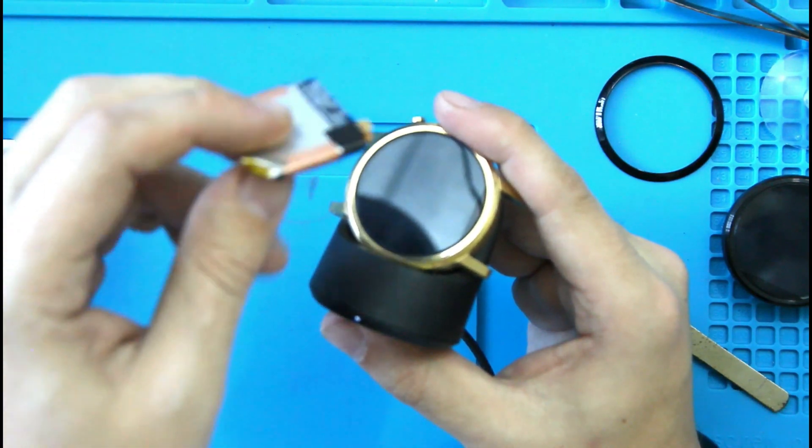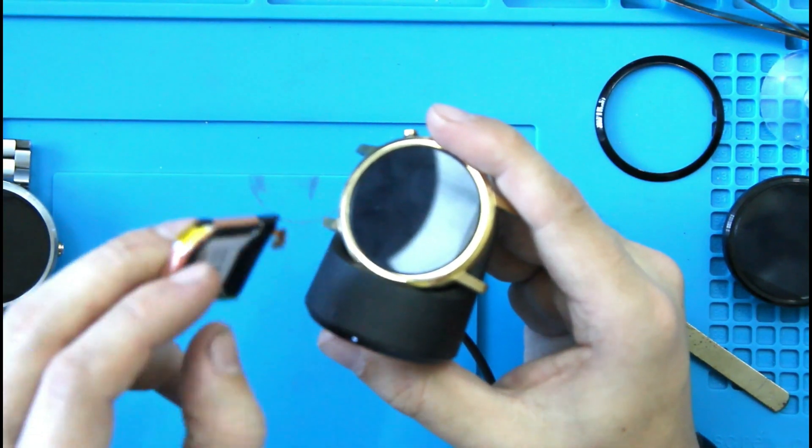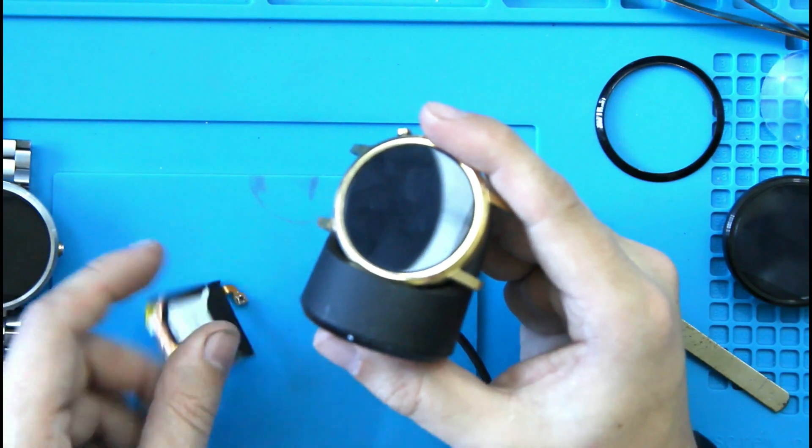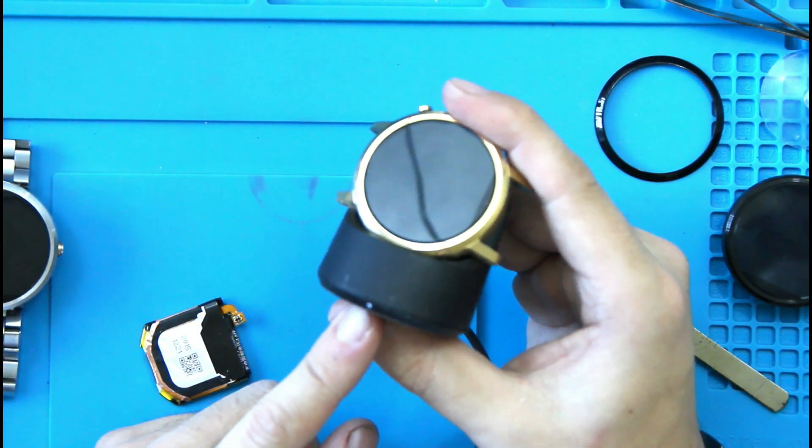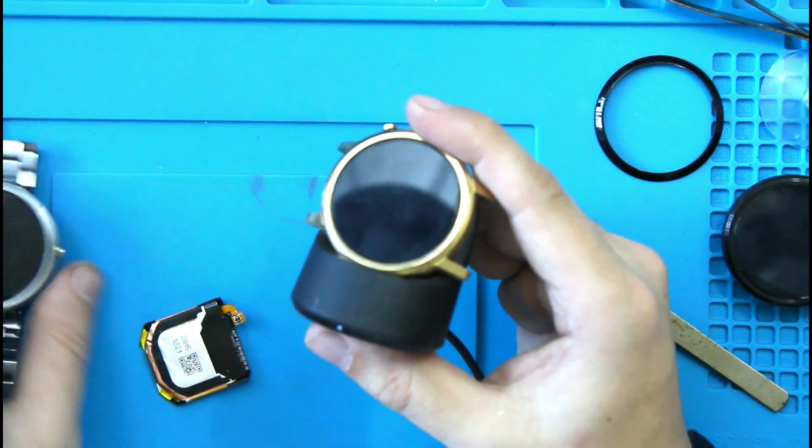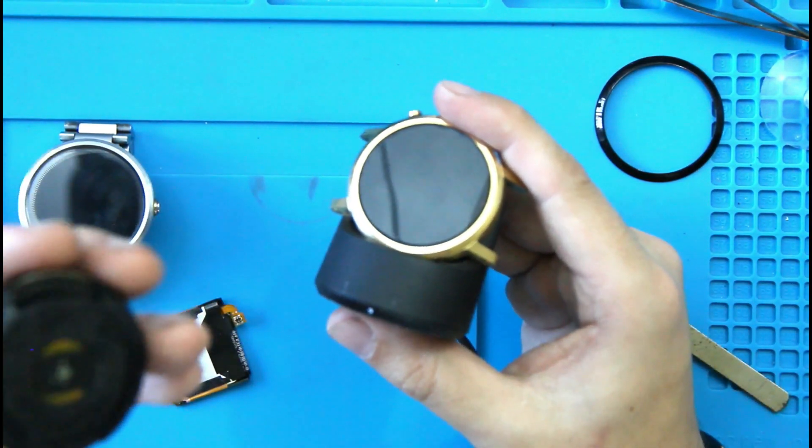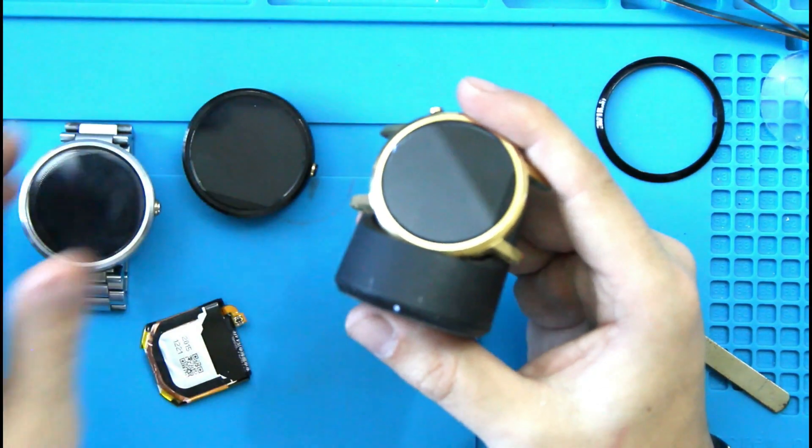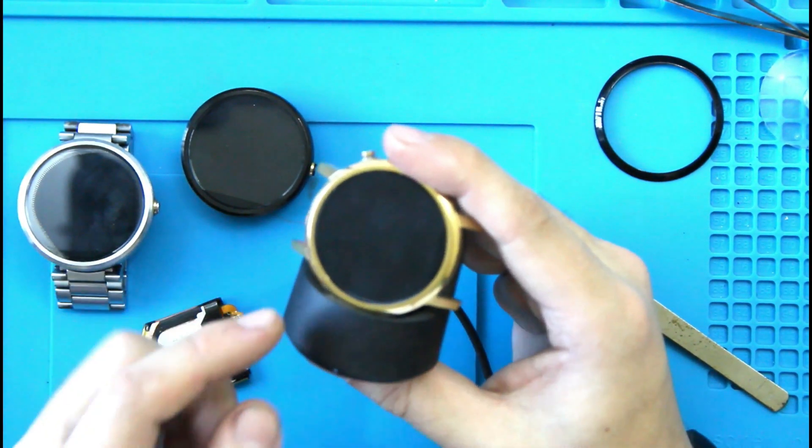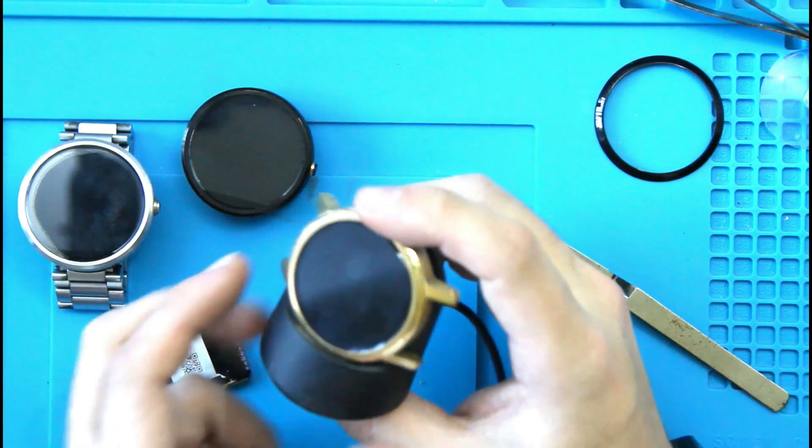So, but still, it's the cheapest part to actually test first. So there you go. Motorola. Probably why they discontinued these watches because basically the quality control on these suck.